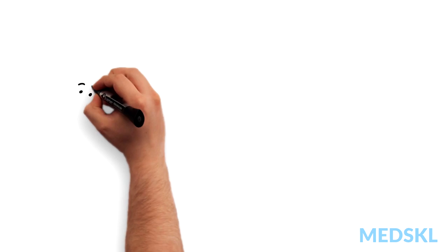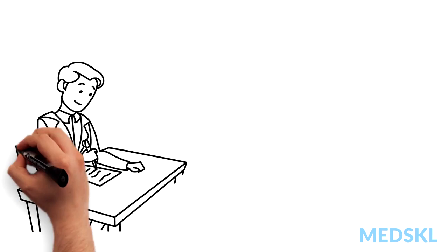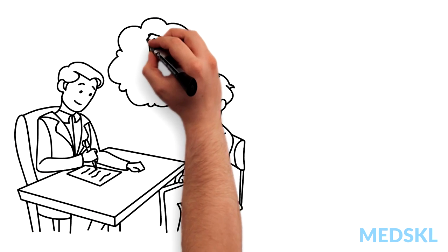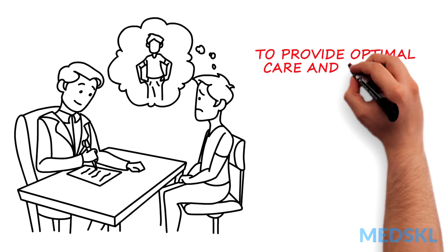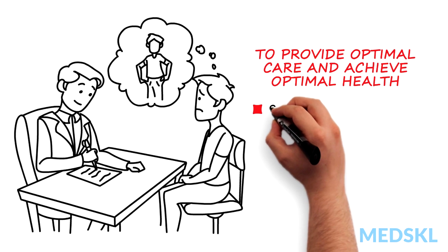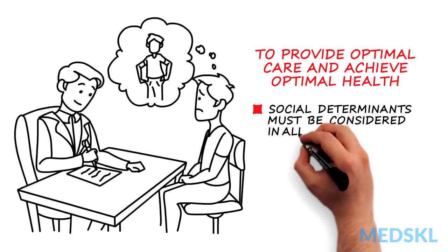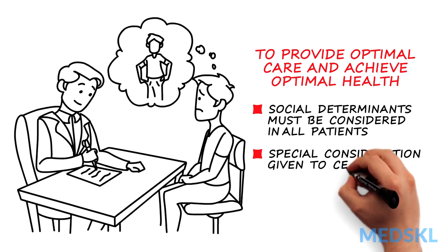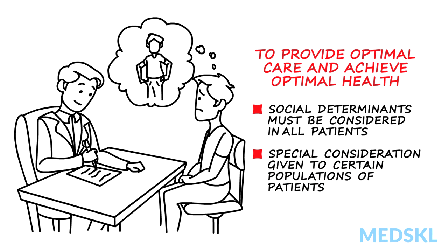The social determinants of health are sometimes a secondary thought when dealing with a patient's primary or presenting health problem. However, to provide optimal care and achieve optimal health, the social determinants must be considered in all patients, and special consideration given to certain populations of patients, as they may be at more risk for adverse health outcomes.